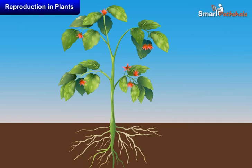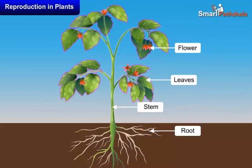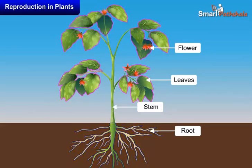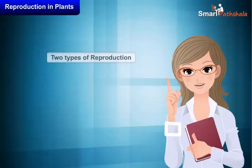Before going to learn about types of reproduction, let us try to recall various parts of a flowering plant. Root, stem, leaves, and flower are the parts present in a flowering plant. Root, stem, and leaves are the vegetative parts, whereas flower is the reproductive part of the plant.